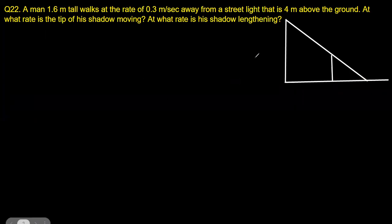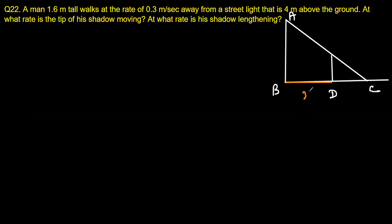Let's name the vertices: A is the top of the lamppost, B is the base of the lamppost, C is the tip of the shadow, D is the position of the man's feet, and E is the top of the man's head. The distance BD is x and DC is y. The lamp height AB is 4 and the man's height ED is 1.6.